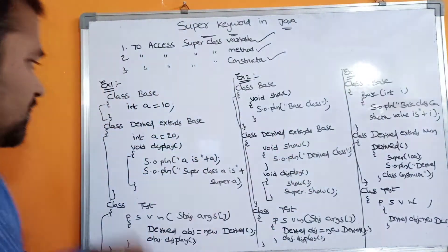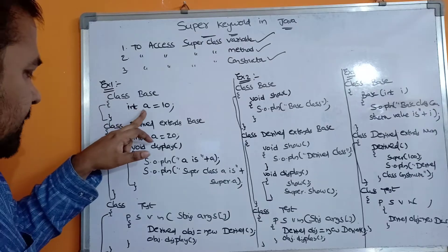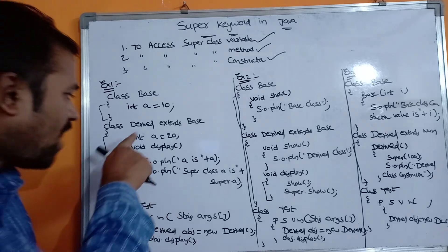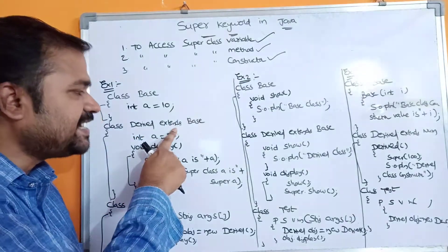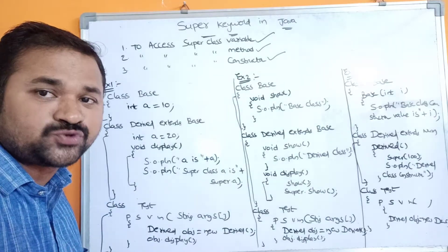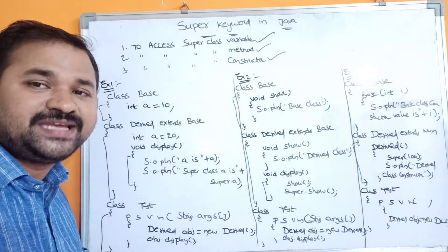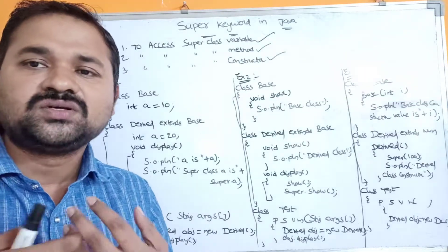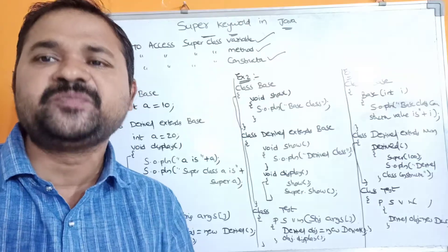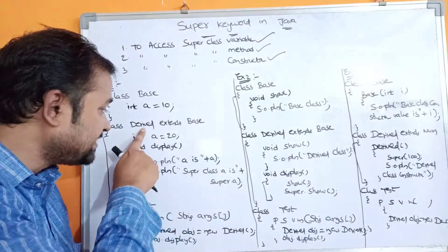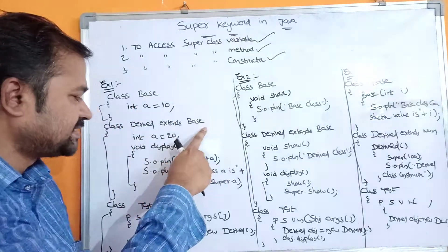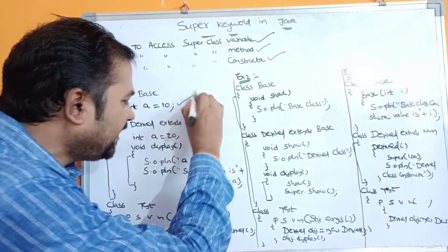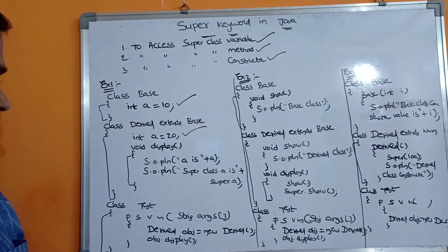Let's see this example. We have a base class which contains a variable: int a is equal to 10. Next we have a derived class which is extending from the base class. We can use the super keyword only while implementing inheritance - if there is no inheritance, there is no subclass, so it is not possible to use the super keyword. So class derived extends base, and int a is equal to 20. We have a variable called a in both the base and derived classes.